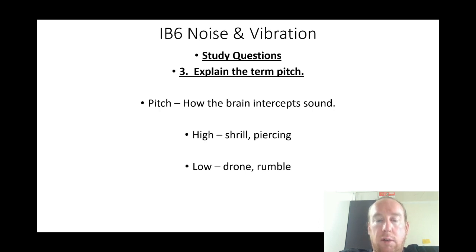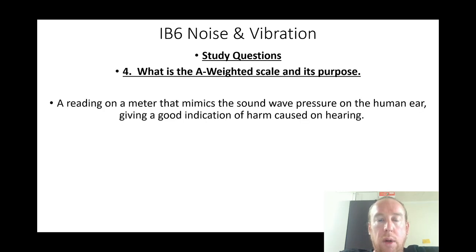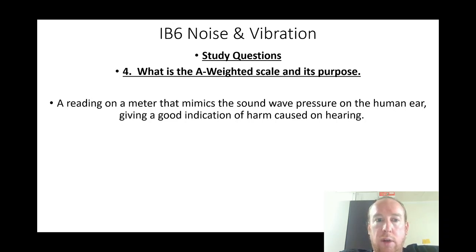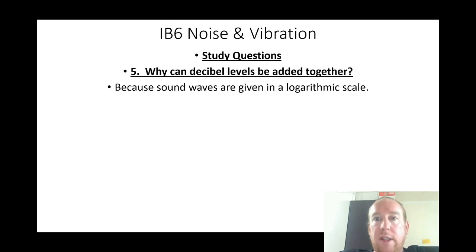Explain the term pitch: how the brain intercepts sound — high, shrill, piercing, or low drone/rumble. What is the A-weighted scale and its purpose? A reading on a meter that mimics sound wave pressure on the human ear, giving a good indication of harm caused to hearing. Why can decibel levels not be added together? Because sound waves are given on a logarithmic scale.